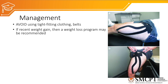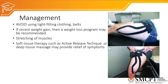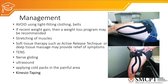Management includes avoiding tight-fitting clothing or belts. If the patient is obese or has had recent weight gain, a weight loss program may be recommended. Stretching of the tensor fasciae latae — the lateral muscle of the thigh — has shown positive results in meralgia paresthetica. Soft tissue therapy such as active release technique or deep tissue massage may provide symptom relief. TENS, nerve gliding, ultrasound, cryotherapy or cold packs, and kinesio taping also help in reduction of symptoms.